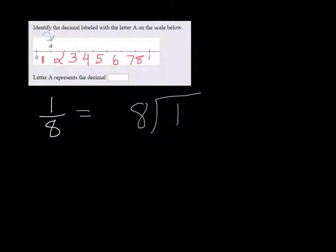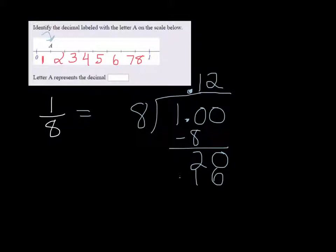So we're going to divide. Eight doesn't go into one. So we're going to add a couple zeros here and a decimal. Make sure to put your decimal up here. Eight goes into ten one time. Subtract. Bring down another zero. Eight goes into twenty twice. Two times eight is sixteen. Remainder of four.